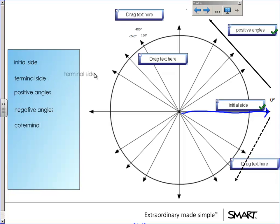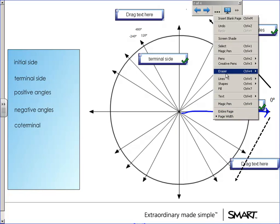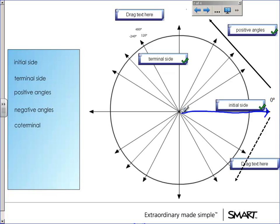Where we stop, that is called the terminal side. So we have an angle here. It began on the positive x-axis, that zero degrees.